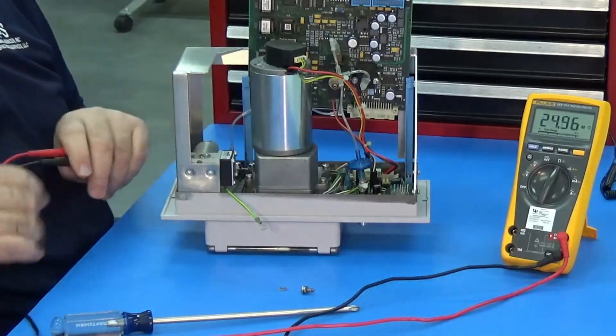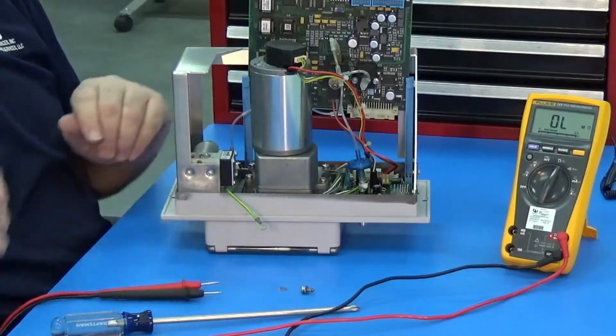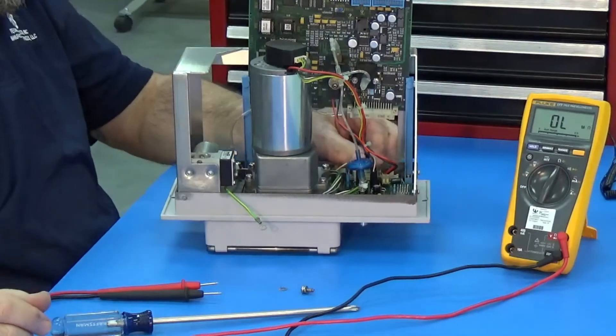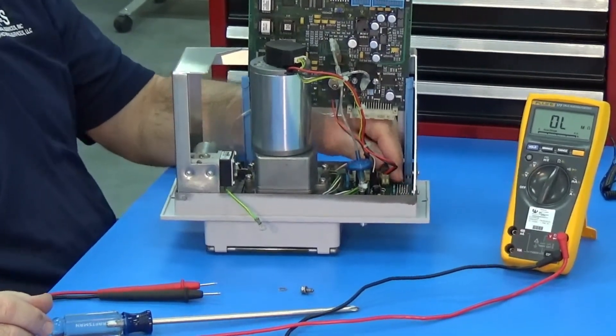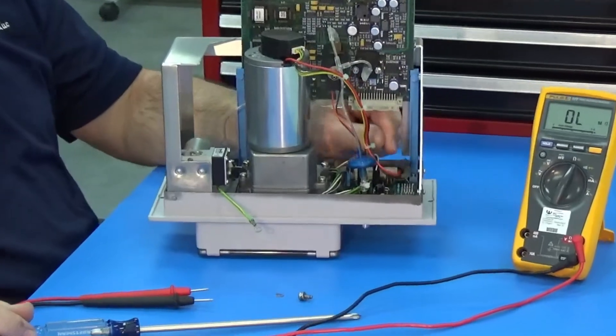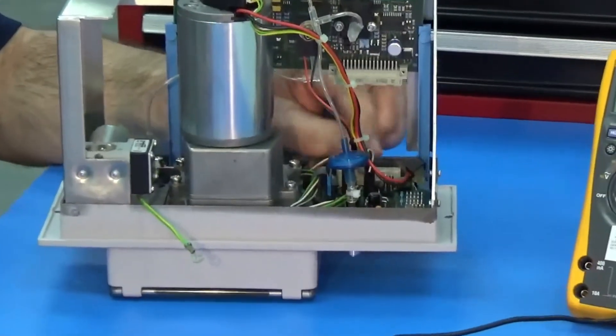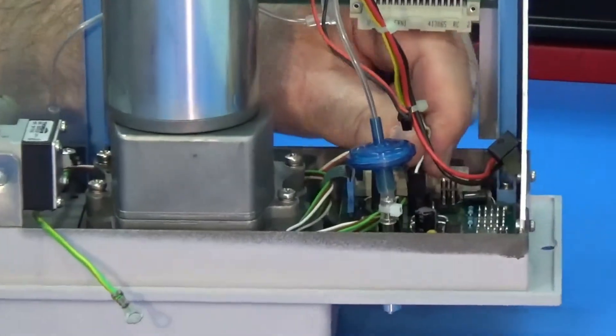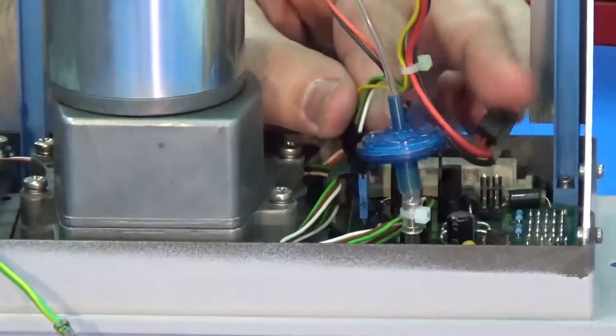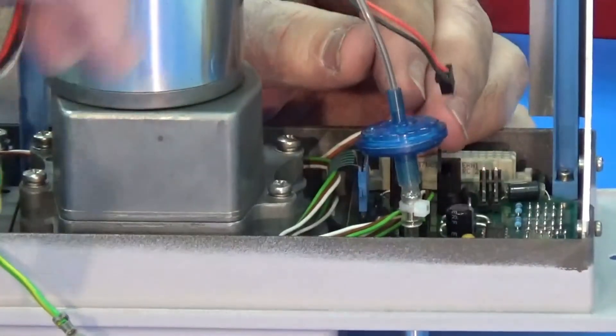Now we've got to remove, to measure the internal connections in the motor, we need to remove the motor cables. Pull the tab back and remove the optical cable. Take both of them out.